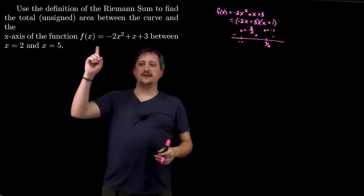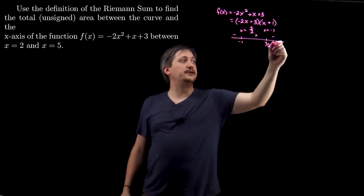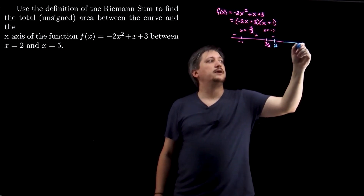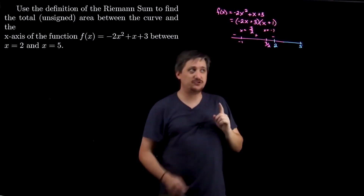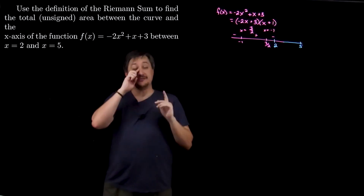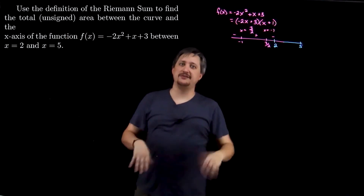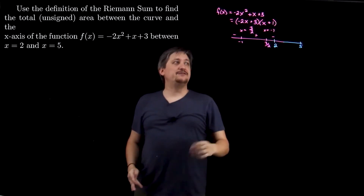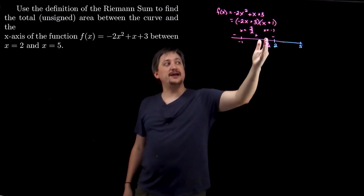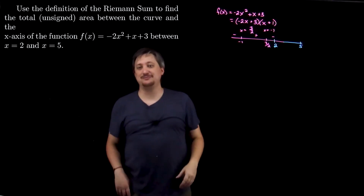My sign chart has critical points at negative one and three-halves. Since this is a downward-facing parabola, it's positive in the middle (between the zeros) and negative on either side. I want to integrate from two to five. Both two and five are on the same side — they're both in the negative region — which means I don't have to calculate two separate Riemann sums for two different sections. Everything is negative, so I can convert to unsigned area at the end.